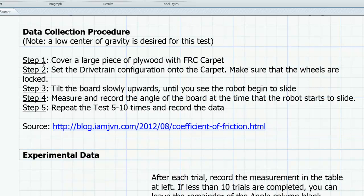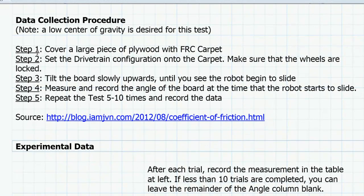The steps I will use in collecting my data are also listed. Imagine that I have designed and built my vehicle or my robot and that it is going to perform on a carpeted field. In order to determine the coefficient of friction experimentally, I am first going to cover a large piece of plywood with the field covering. Then, I will set the vehicle onto the plywood with the wheels locked so that I can observe the angle at which the vehicle first begins to slip when the board is raised. As I tilt the board slowly upwards, I observe the vehicle carefully and I measure and record the angle that the board makes with the floor when the robot begins to slide. And I am going to repeat this test five to ten times and record the data.